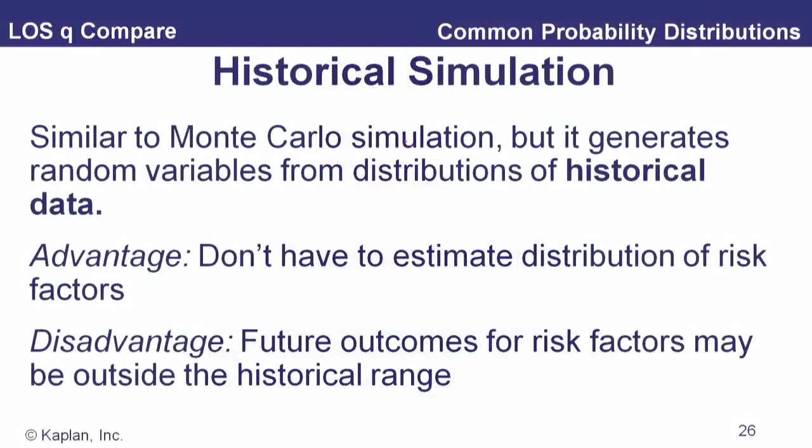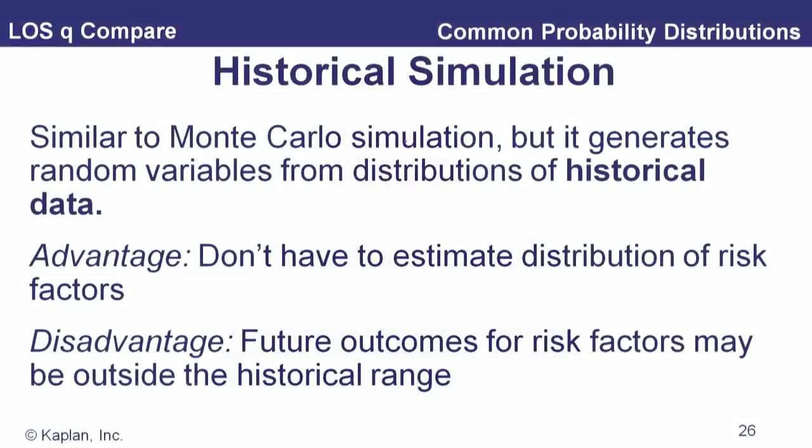Historical simulation is similar to Monte Carlo simulation, but instead of specifying distributions, we draw randomly from historical data — historical interest rates and historical asset prices — without needing to specify distribution parameters, simply assuming the future distribution will resemble the past. The disadvantage is that future outcomes for these risk factors may be outside the historical range; if the distribution of interest rates changes, drawing from the historical distribution will not work out well.